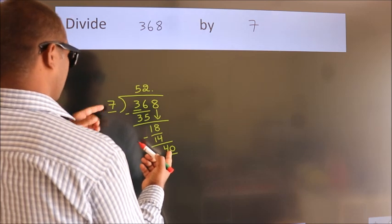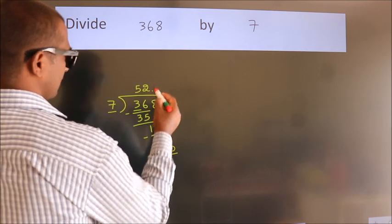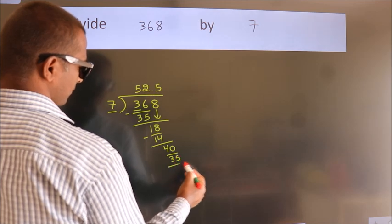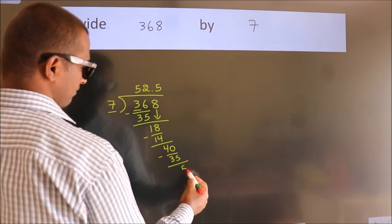A number close to 40 in the 7 table is 7 fives, 35. Now we subtract. We get 5.